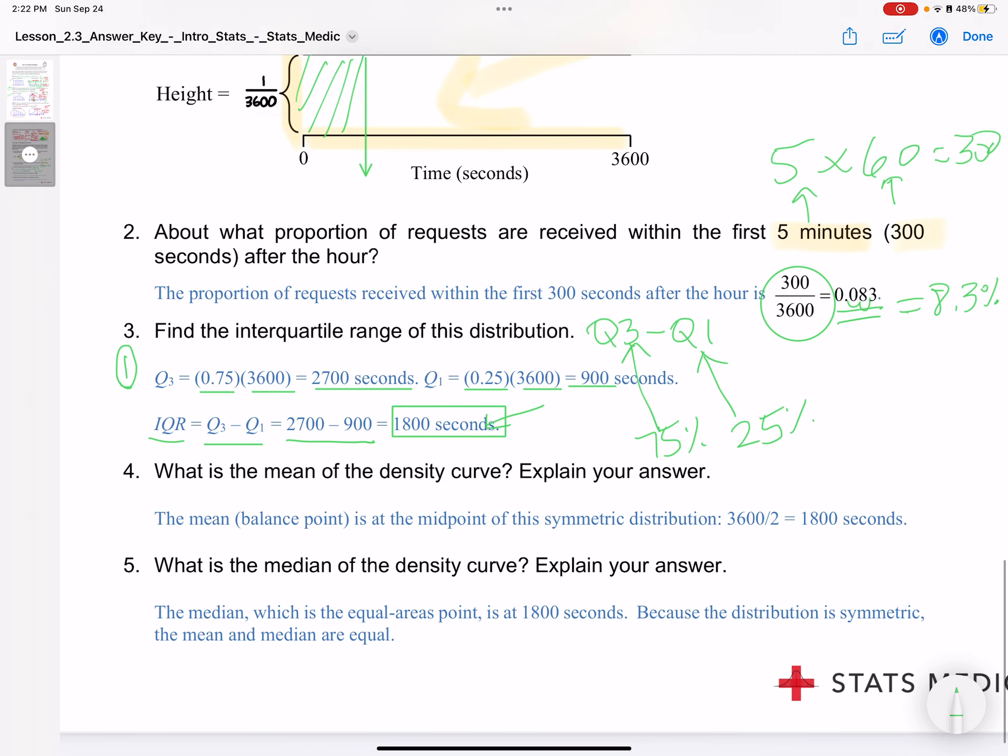What is the mean of the density curve? The mean or balance point is the midpoint of the symmetric distribution. Since the distribution looks exactly perfect, halfway between zero and 3600, it's just going to be halfway because it's cut in half perfectly, which is 1800. The median is also going to be 1800 because it's a perfectly symmetric distribution. All right, thanks for listening, and we'll see you next time.